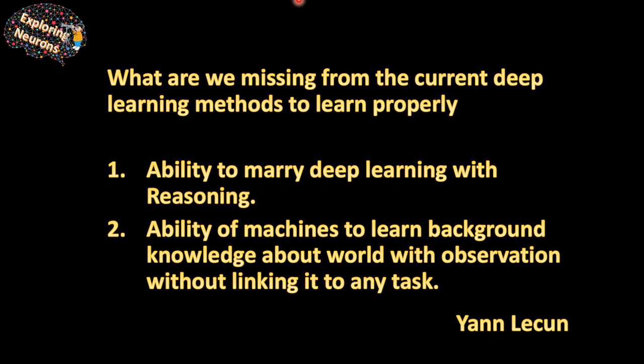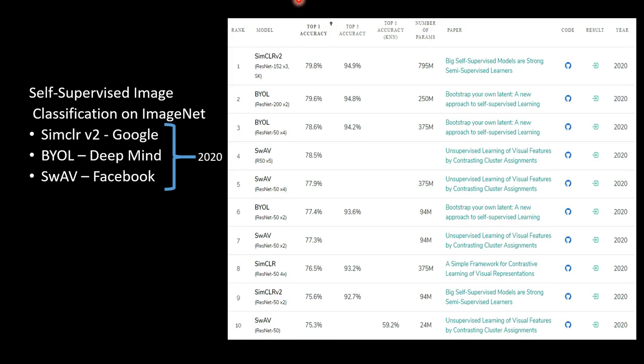This is one statement from Yann LeCun from the Coon lectures, where he says: what are we missing from current deep learning methods to learn properly? One is obviously to marry deep learning with reasoning — although a lot of progress has been made, we still cannot explain all the decisions. Another is the ability of machines to learn background knowledge from data just from observation, without binding them to any task. This unsupervised or self-supervised representation learning is one way to do that.